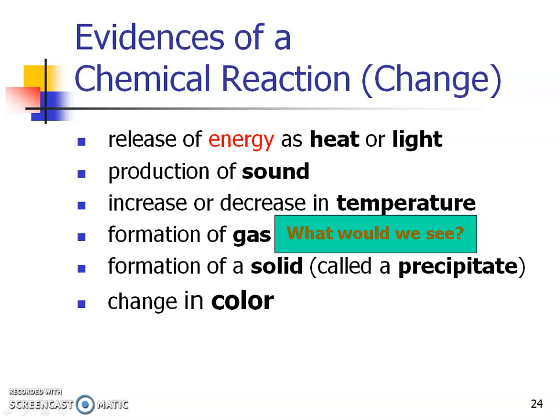These are the different evidences of a chemical reaction or chemical change. We've seen most of these prior in our course so far. But there's two things that you can see with the formation of a gas, and that would be you could see bubbles or smoke. These are just evidences of that chemical change, which is going to be important in this chapter when we're dealing with reactions.